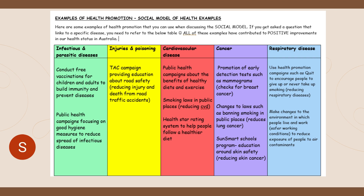This document provides examples of health promotion for the categories of disease we've focused on. It's not limited to these — you might get different diseases on an exam — but it gives a starting point. For example, for cardiovascular disease, smoking laws in public places through Quit aim to help reduce CVD and cancer. SunSmart is a good example for cancer, focusing on education around skin safety to help reduce skin cancer. You might want to add your own examples to help support your answers.